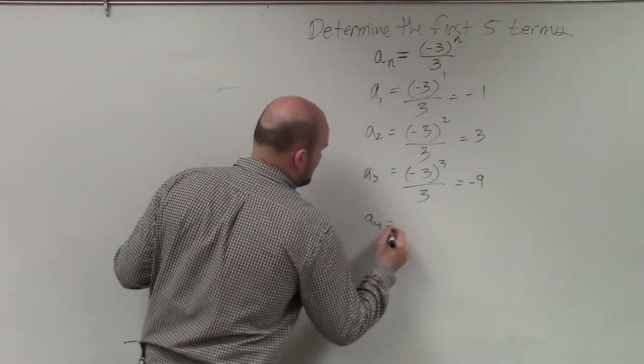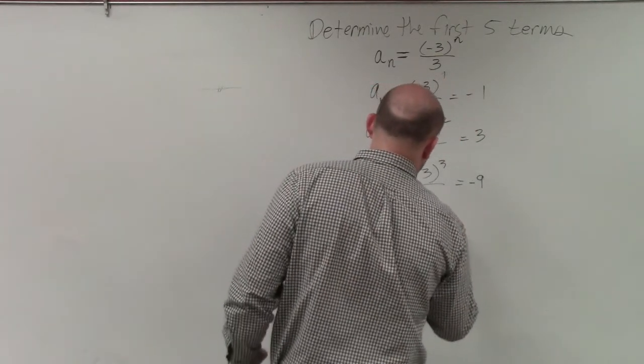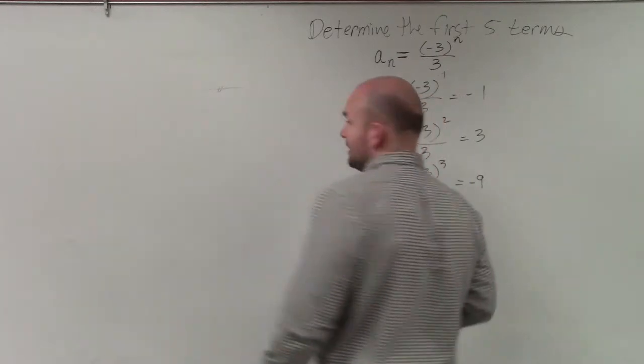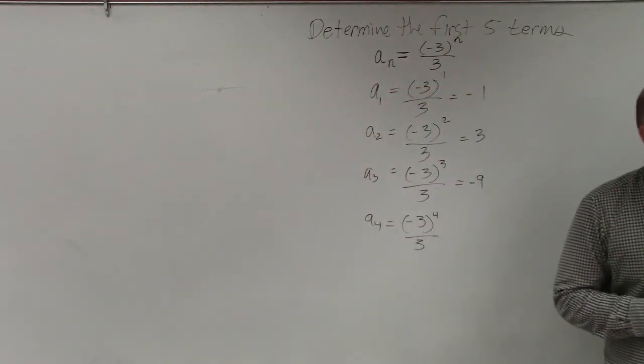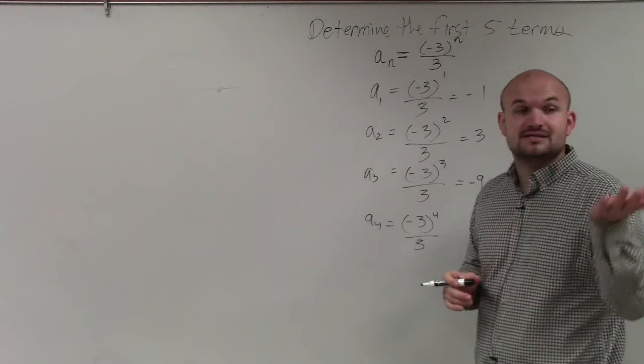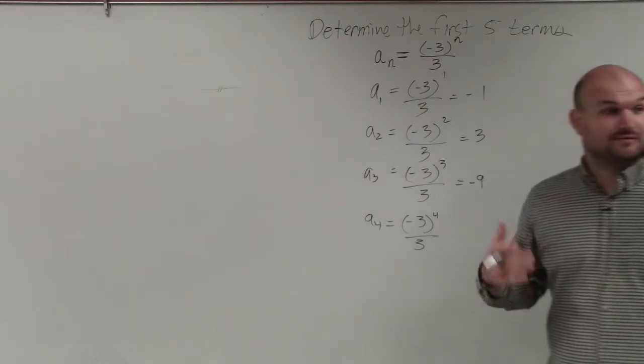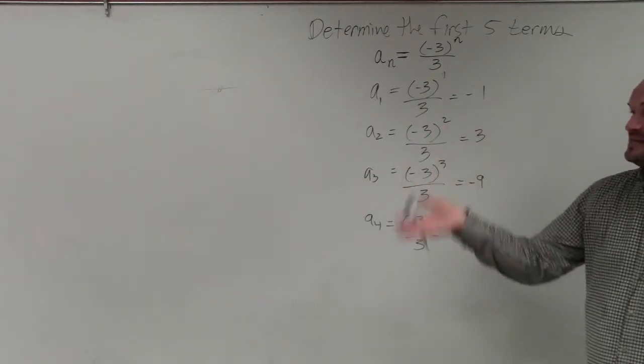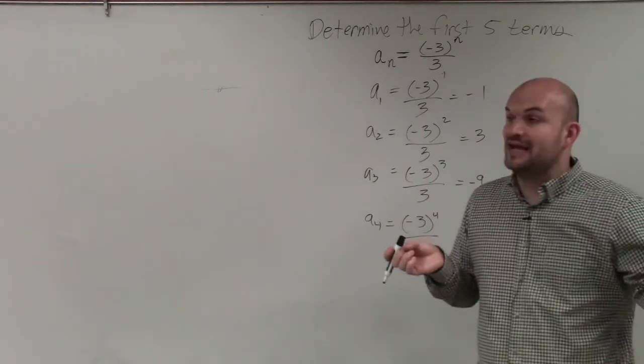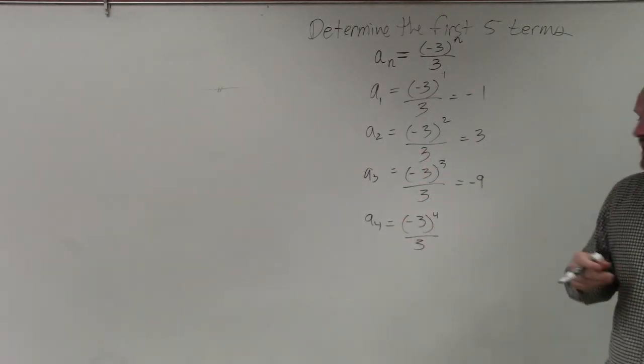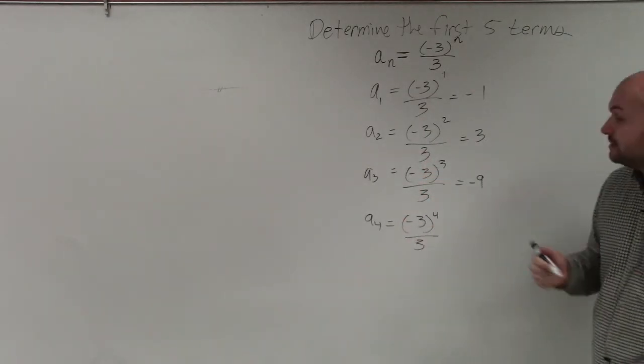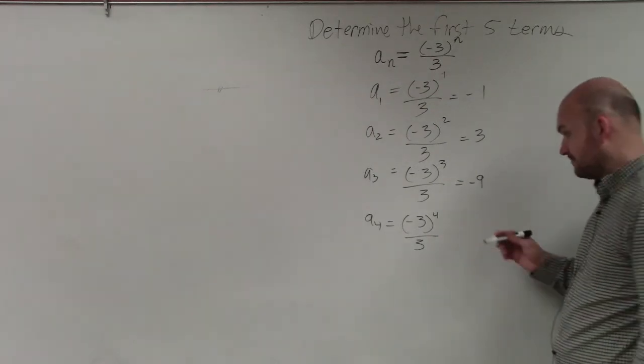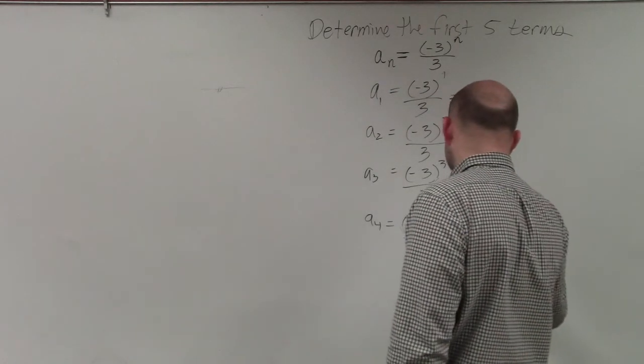Then we have a to the fourth, which is negative 3 raised to the fourth divided by 3. Now, negative 3 times negative 3 is negative 9. And then we have to do that again, right? Times negative 3 times negative 3. So it's really like negative 9 times negative 9, which would be a positive 81. 81 divided by 3 is going to leave us with positive 27.